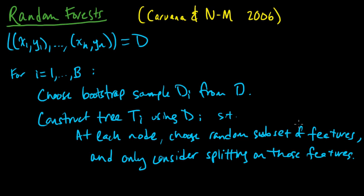We'll pick M features. There's two parameters here: B is going to be our number of trees, and M is going to be the number of features.